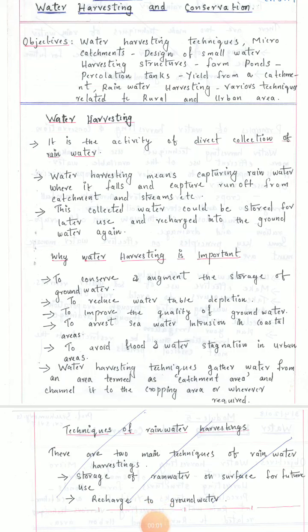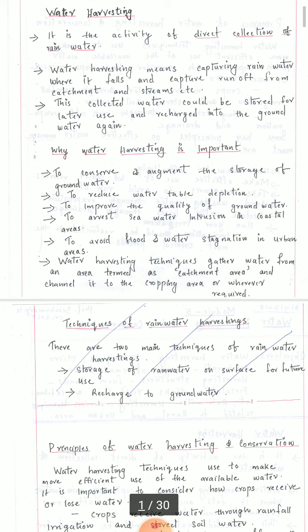Dear students, in this video section we will start with module number 5, that is water harvesting and conservation. In this module we will be learning different topics such as water harvesting techniques, micro catchments, design of small water harvesting structures, farm ponds, percolation tanks, yield from a catchment, and rainwater harvesting. In this we will be studying about various techniques related to rural and urban areas. First we will start with the topic called water harvesting.